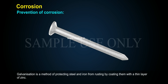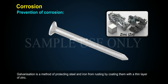Galvanizing. Galvanization is a method of protecting steel and iron from rusting by coating them with a thin layer of zinc.